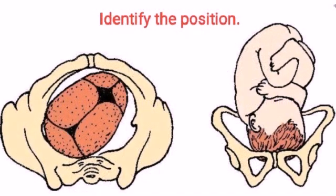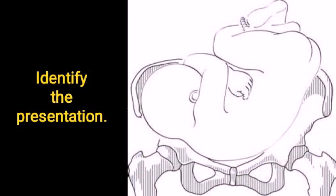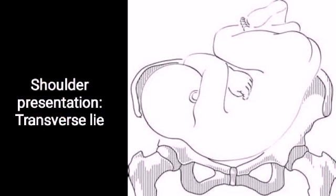Identify the position: Right occipital posterior. Identify the presentation: Shoulder presentation — transverse lie.